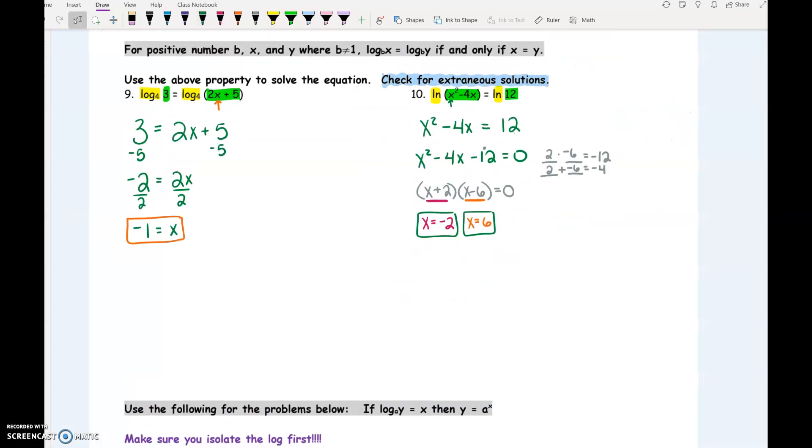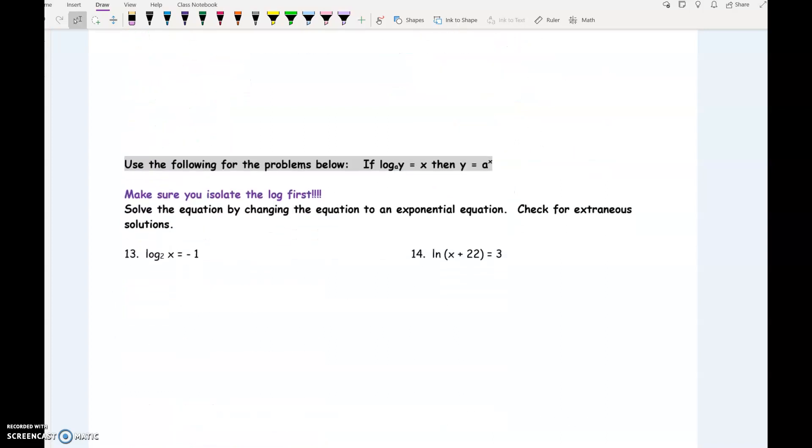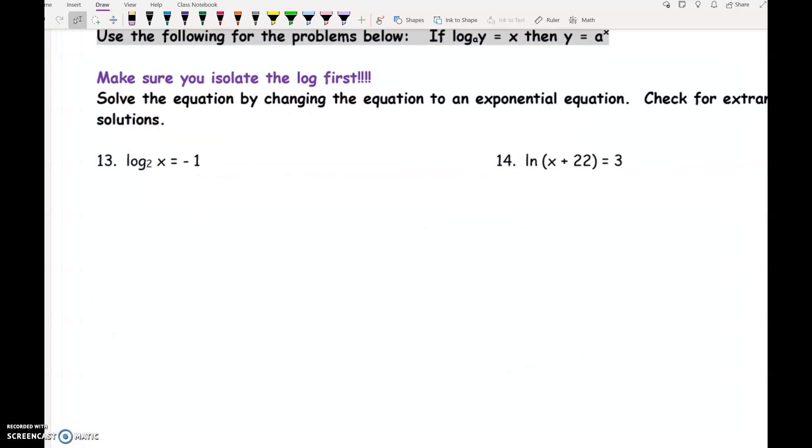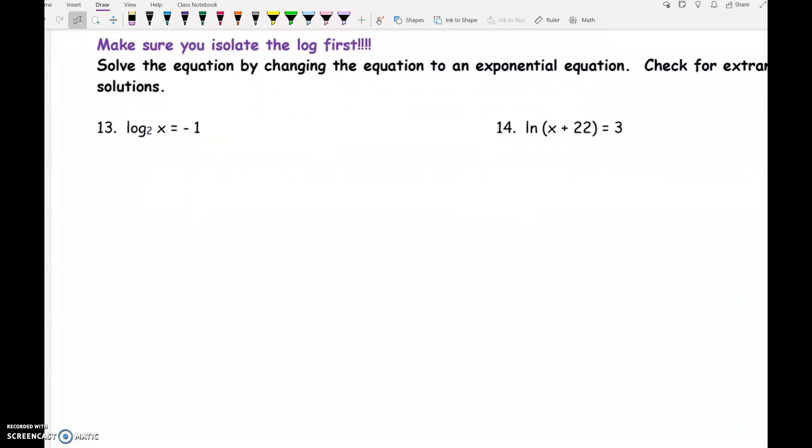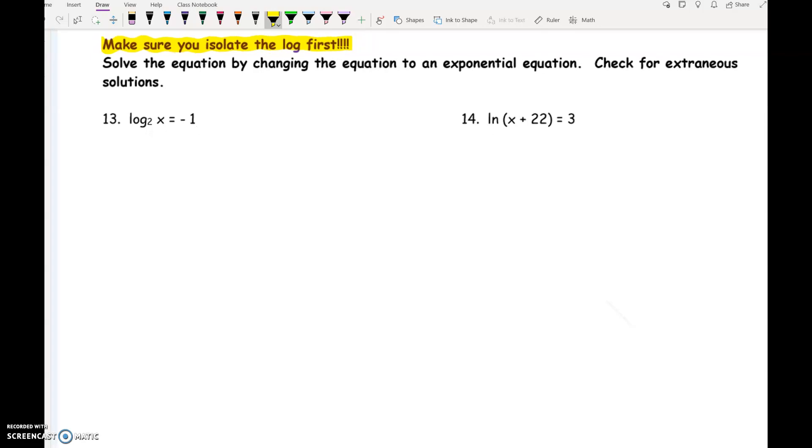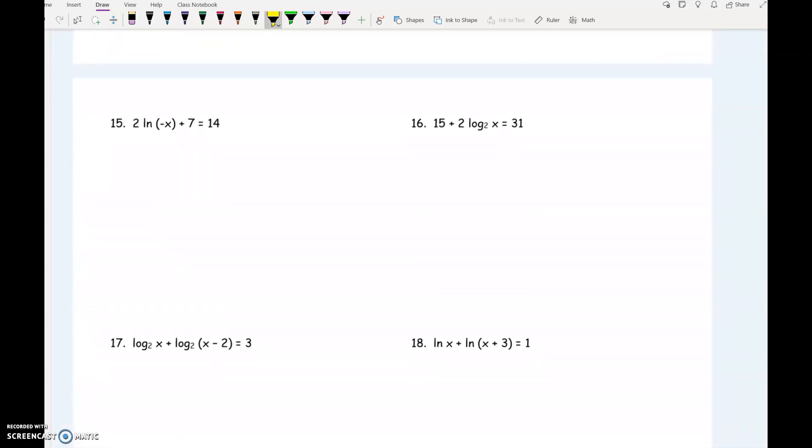So if there's logs on both sides, set them equal to each other, you're good. What if there's only a log on one side? And it does say here, make sure you isolate the log first. Both of these are already isolated. It'd be like, check out number 15 on the next page. You'd have to subtract 7 on both sides and then divide both sides by 2. Then you could do the next step. So always make sure that the log has been isolated first.